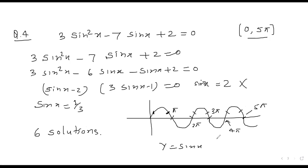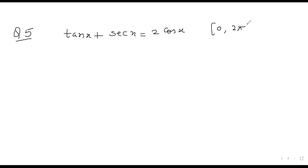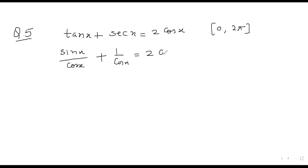Question number 5: find the number of solutions of tan x + sec x = 2 cos x in the interval [0, 2π]. We write it as sin x/cos x + 1/cos x = 2 cos x.